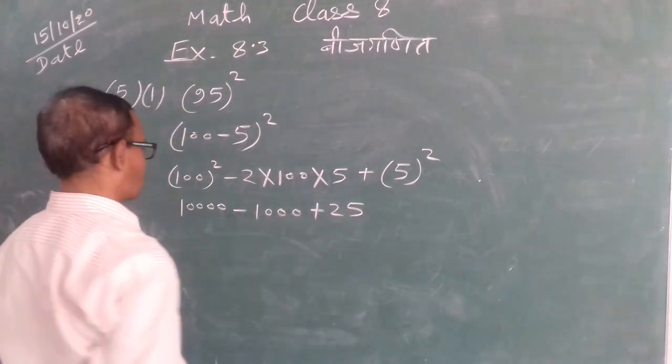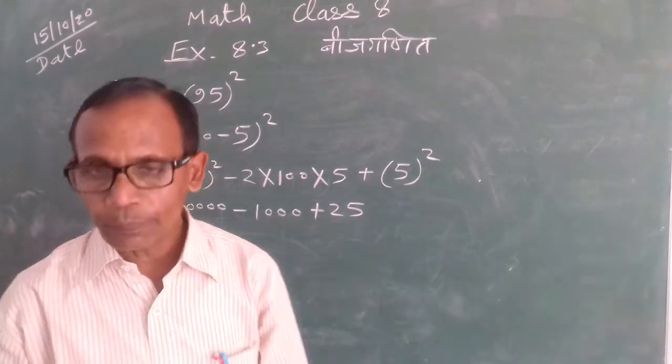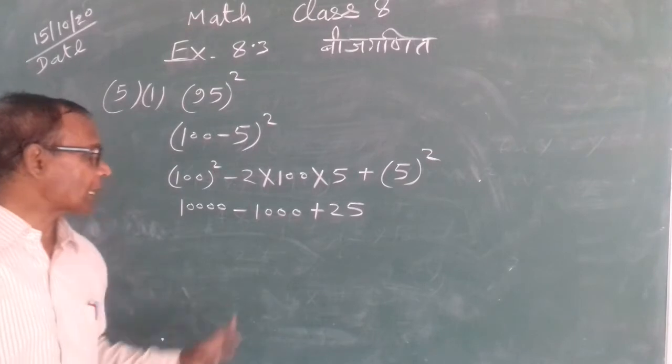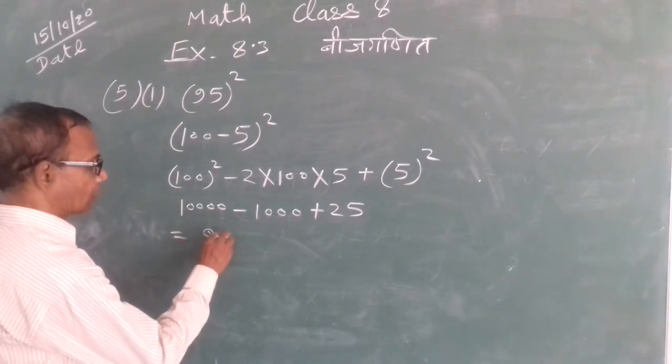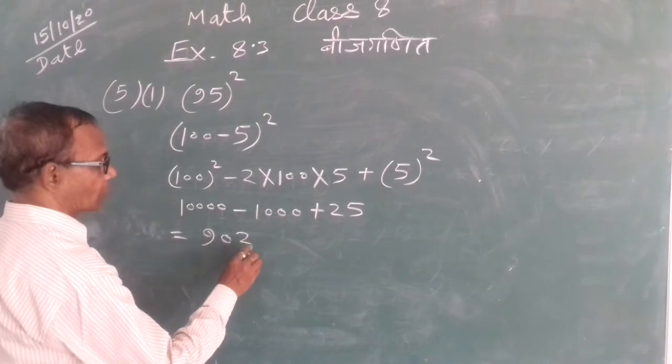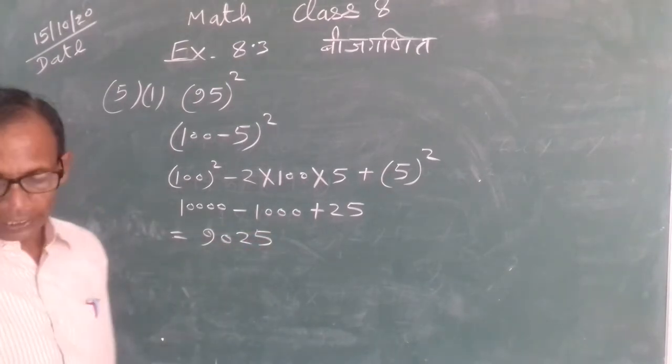100² equals 10,000, minus 2 × 100 × 5 equals minus 1,000, plus 25. So 10,000 minus 1,000 plus 25 equals 9,025.